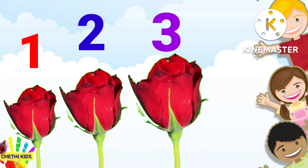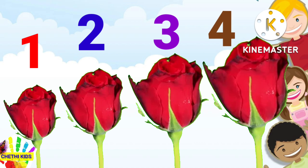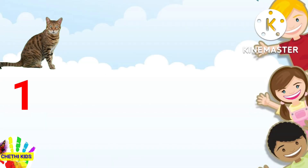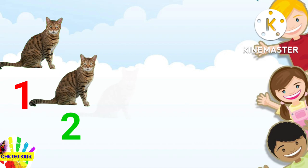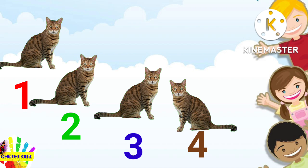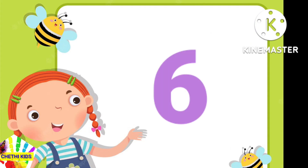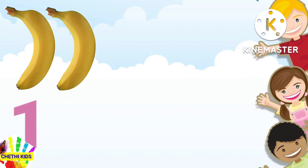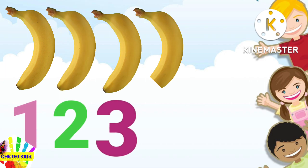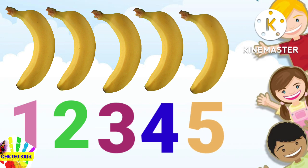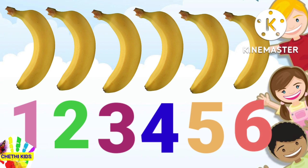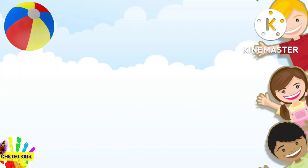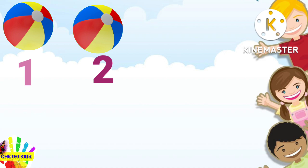Four. Let's count the objects: one, two, three, four — four roses. Five. Let's count the objects: one, two, three, four, five — five cats. Six. Let's count the objects: one, two, three, four, five, six — six bananas.